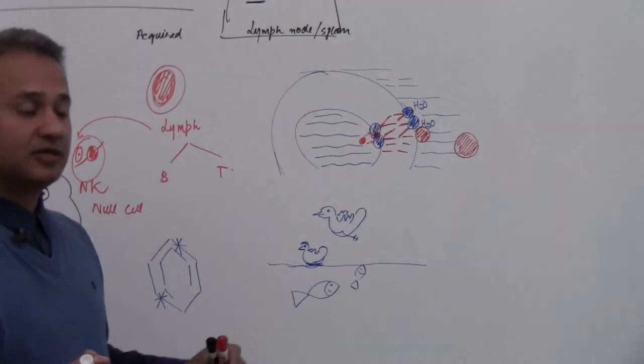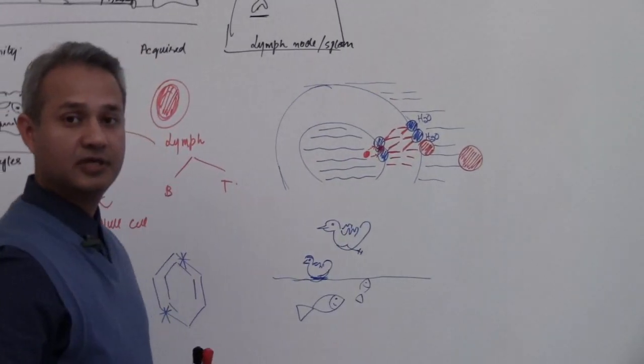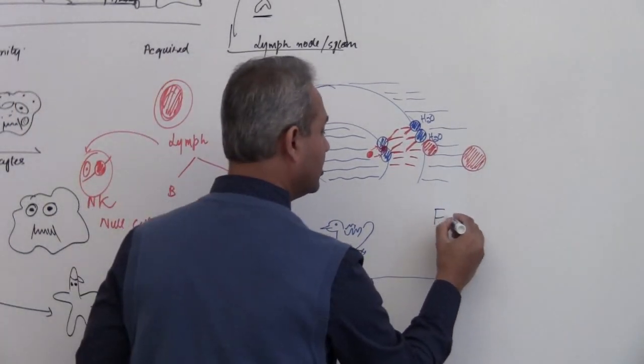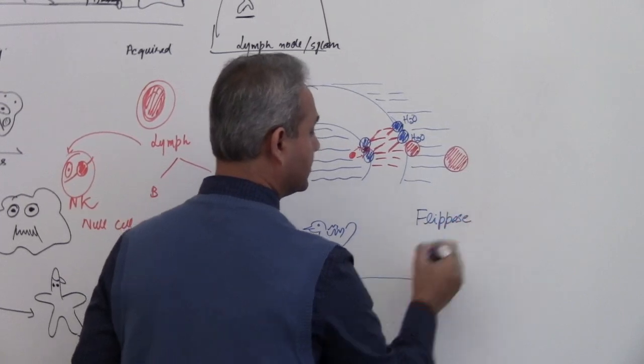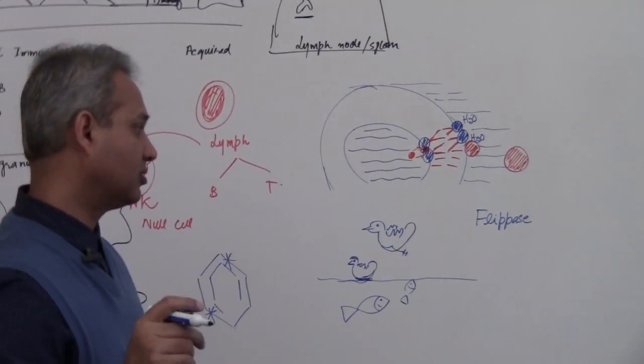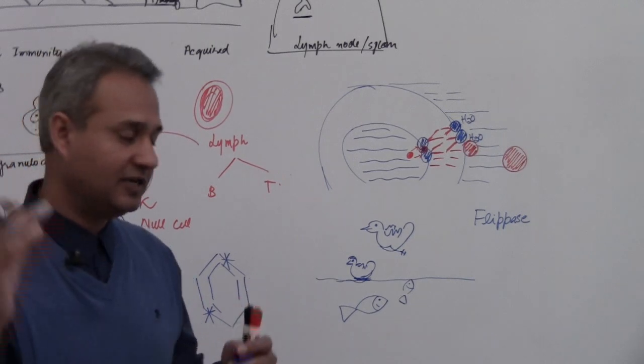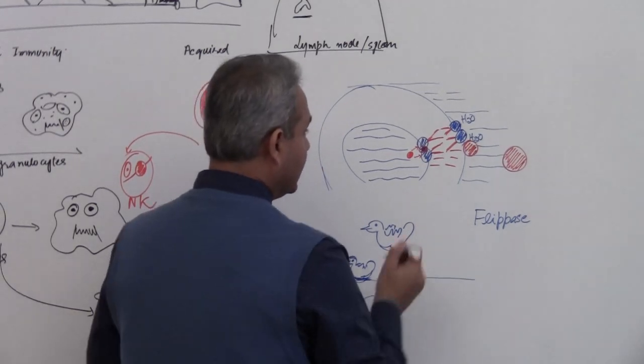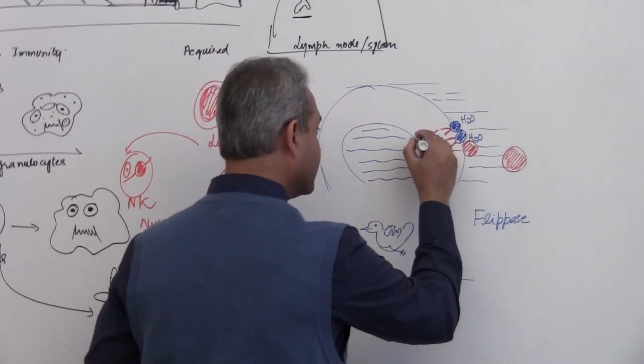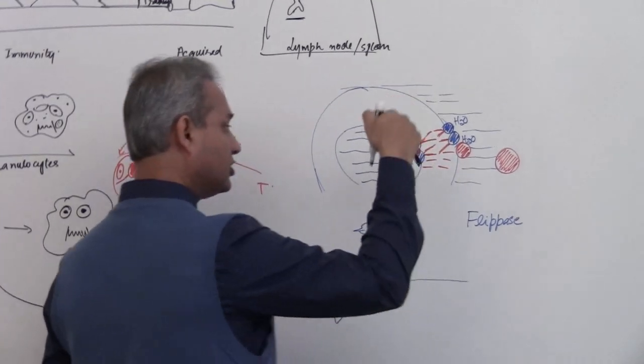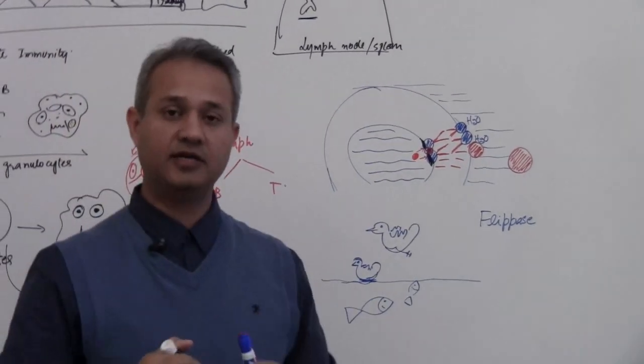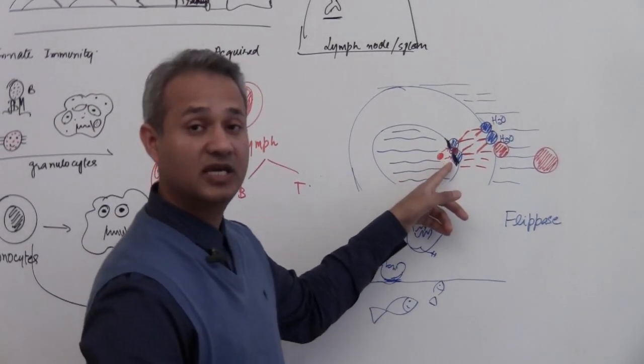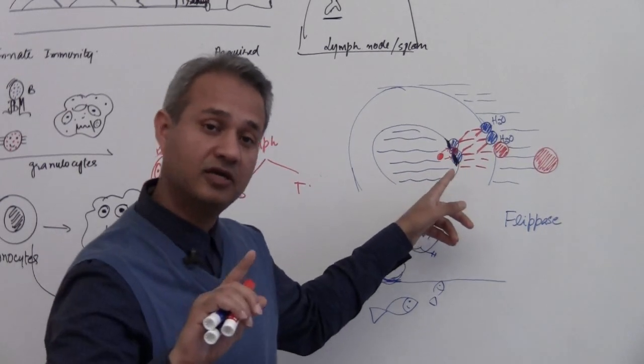In case of our cells, there is a special protein called flippase. What it does is it binds these proteins on the inner side to the inside. So it holds on to the proteins or the molecules which are on the inner side of the cell membrane to the inside.